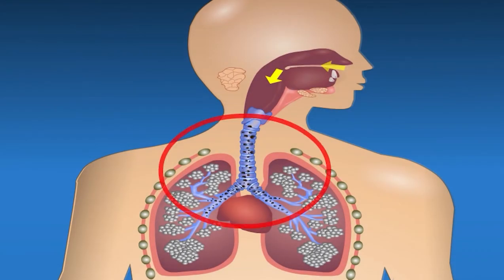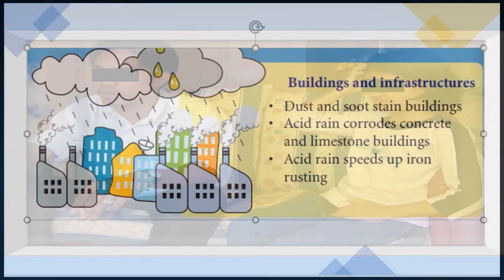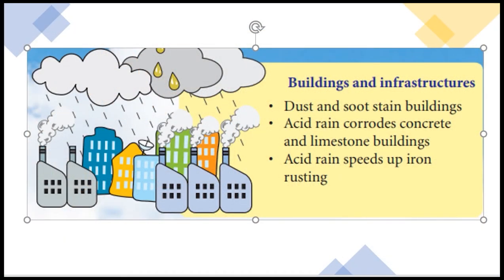Humans need to inhale clean air during respiration. However, if unclean air is inhaled, the pollutants inside the air can enter into our body. Some of these dangerous pollutants will be trapped inside our throat and lungs and cause serious respiratory problems. Harmful substances in cigarette smoke can make breathing difficult and cause severe headache to humans.